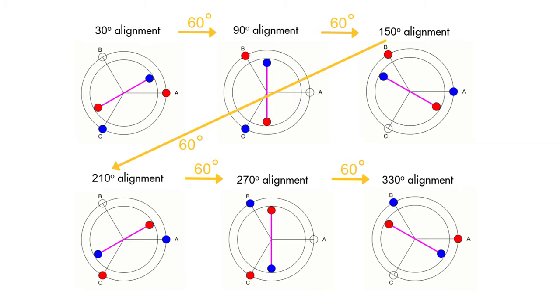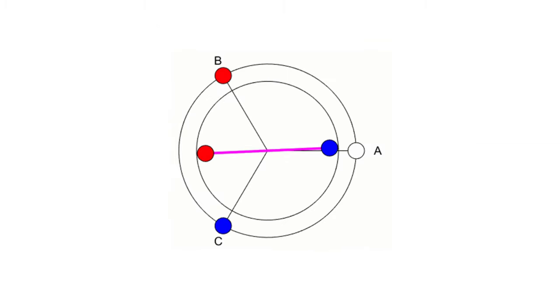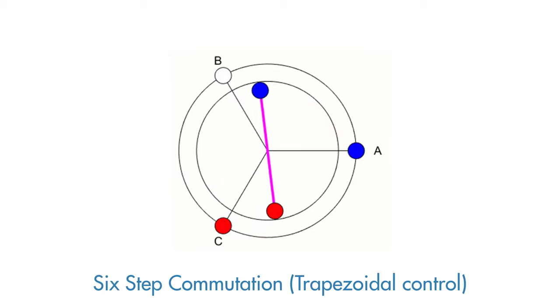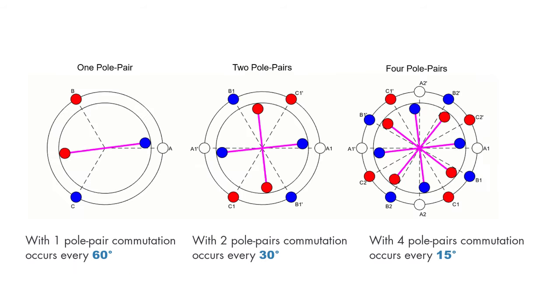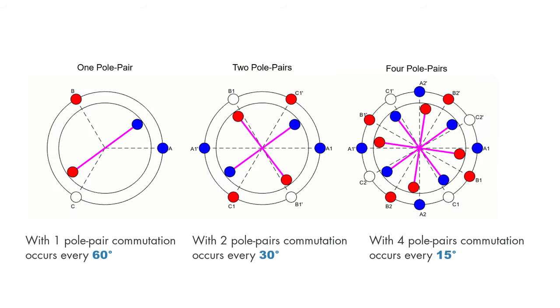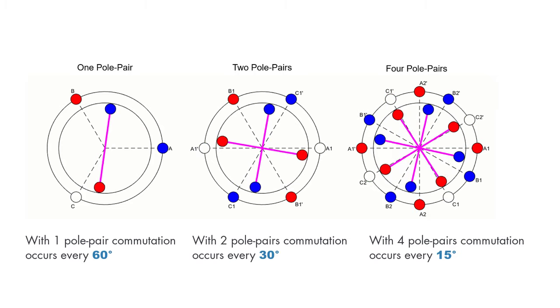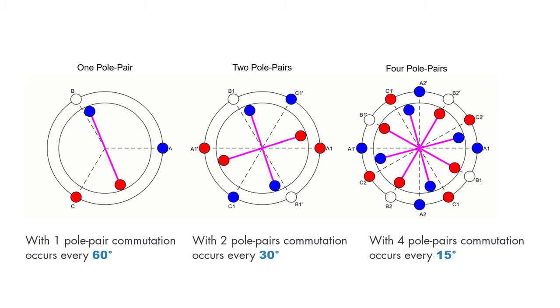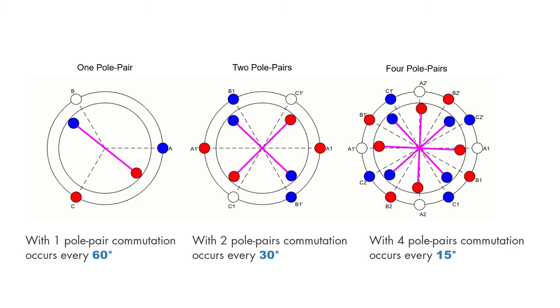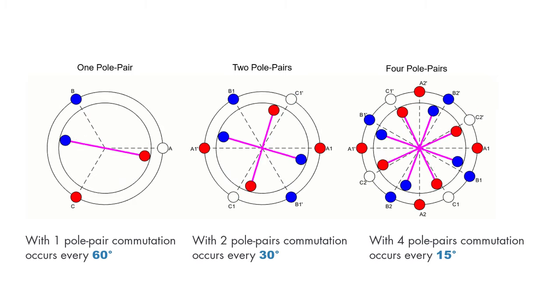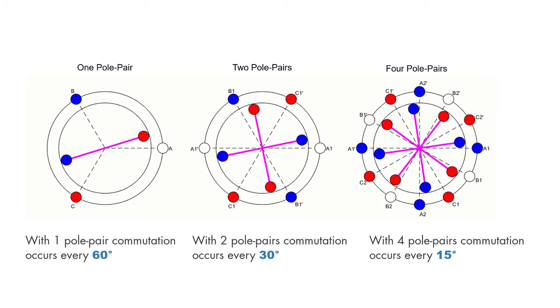And this is called a six-step commutation, or trapezoidal control. Note that, with more pole pairs, the commutation occurs more frequently. To properly commutate the motor at the right times with the correct phases, we need to know the rotor position, which is usually measured by using hall sensors.